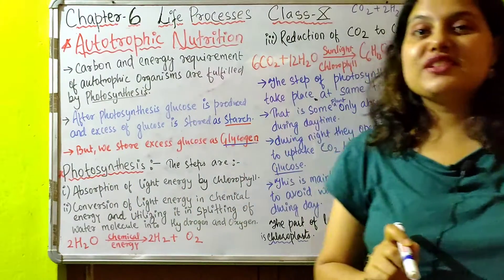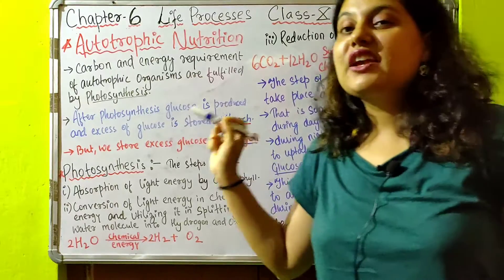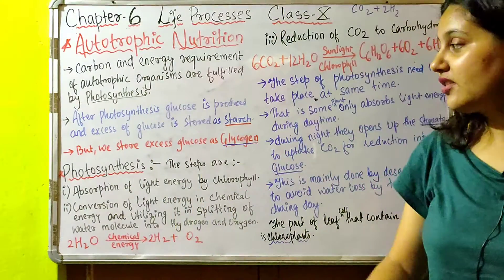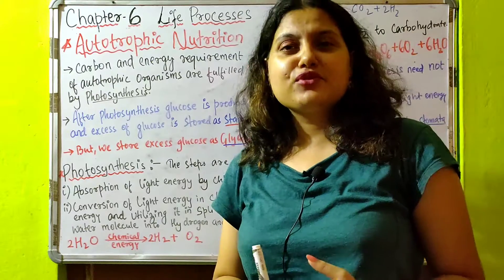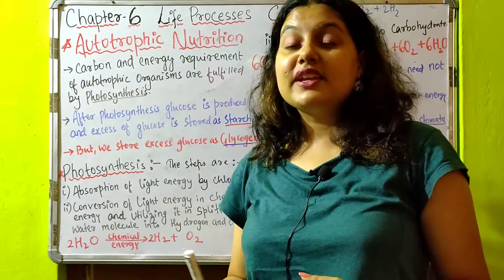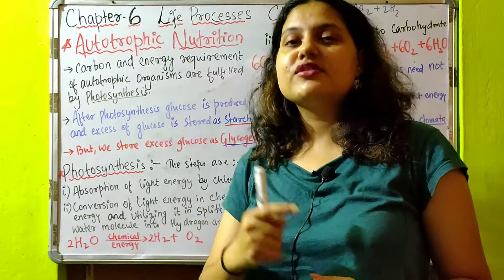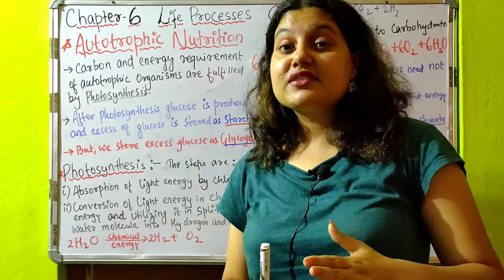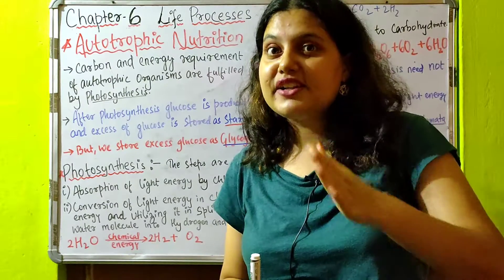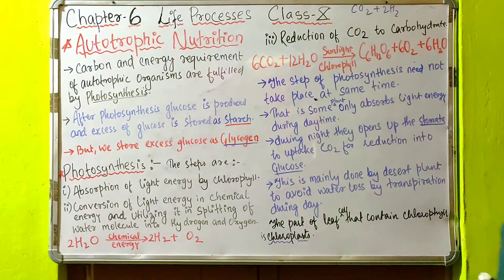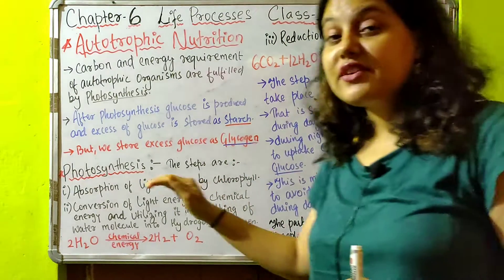Now coming to the process of photosynthesis, which is the basis of autotrophic nutrition. We have been studying photosynthesis since very childhood, but now we will understand the actual steps of photosynthesis very deeply. There are three steps of photosynthesis.